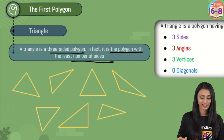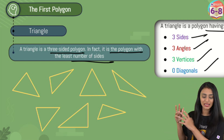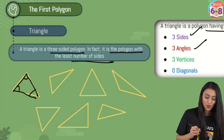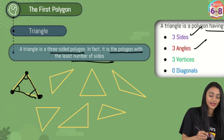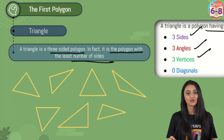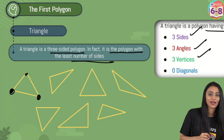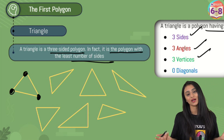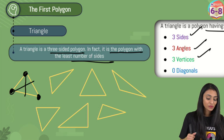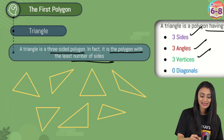A triangle is a polygon having three sides, three angles, three vertices, and zero diagonals. Let me explain. If I pick this triangle, it has three sides — condition fulfilled. Three angles: one, two, and three — fulfilled. Three vertices: first, second, third vertex, which are points where two sides meet. Zero diagonals — because diagonals are formed by joining non-consecutive vertices, but all vertices in a triangle are consecutive, so no diagonal can be formed. A common mistake students make is drawing a line from a vertex to a point on the opposite side — that is not a diagonal. So a triangle has zero diagonals.